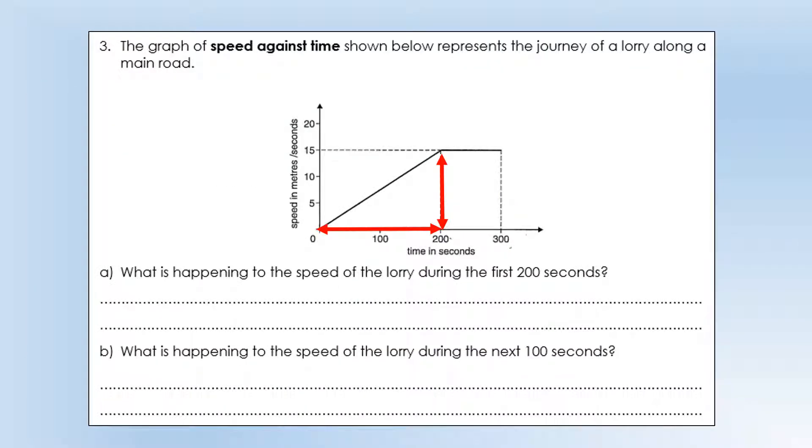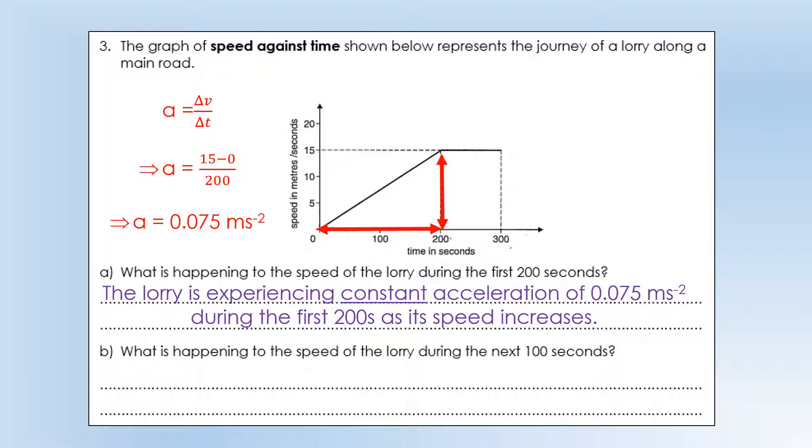The graph of speed against time below represents the journey of a lorry along a main road. What is happening to the speed of the lorry during the first 200 seconds? Well, it's a straight line graph, so we can calculate what the acceleration is by doing rate of change of velocity. The change in velocity is 15, the time taken is 200, so we've got an acceleration of 0.075 meters per second squared. The lorry is experiencing constant acceleration of 0.075 as its speed increases.